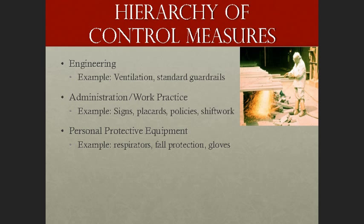Secondly, administrative and work practice control measures are relatively simple. They can be signs, placards, policies, or having employees work in different shifts so they don't get too much exposure to a chemical or too much noise exposure. There are many different things we can do administratively to minimize or lower the exposure of employees to certain workplace hazards.